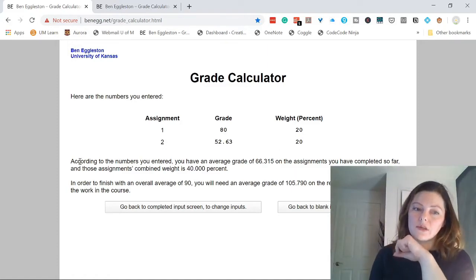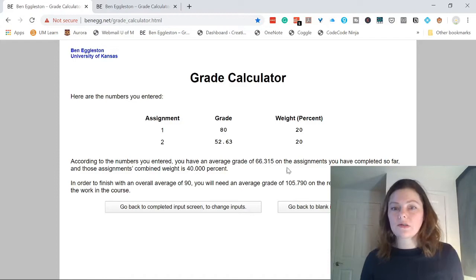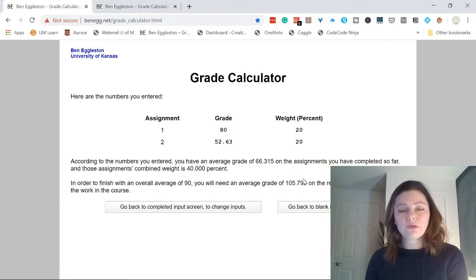See, that's what it says. According to the numbers you entered, you have an average grade of 66 on the assignments so far. In order to finish with an overall grade of 90, you will need an average of 105 on the remaining 60%. Well, this is not possible to achieve.